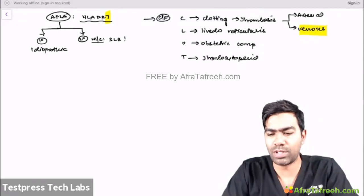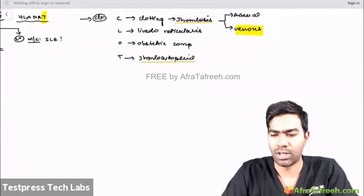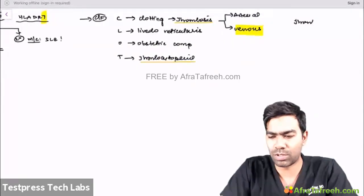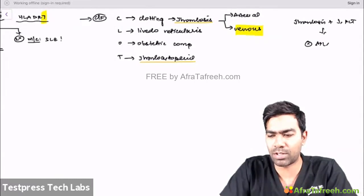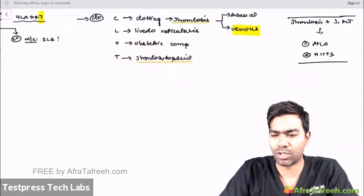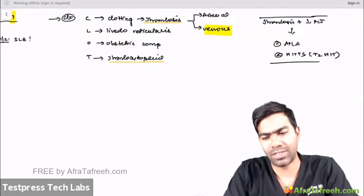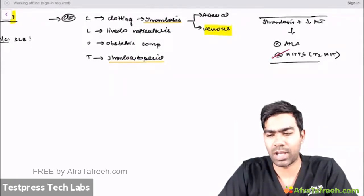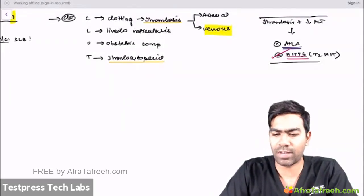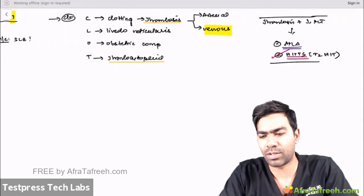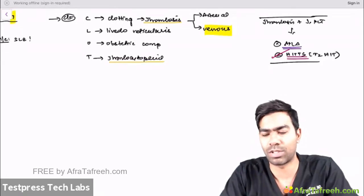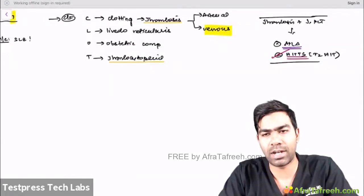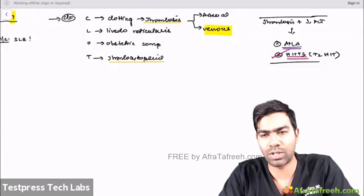APLA is one of the few diseases that produces thrombosis together with thrombocytopenia. In exams, whenever you see large-vessel thrombosis with low platelets, the two differentials are APLA syndrome and HITS (heparin-induced thrombocytopenia and thrombosis syndrome, type 2 HIT). The differentiator: if there is a history of heparin use, it is HITS; if not, it is APLA. Note that DIC causes only microvascular thrombosis, while APLA and HITS cause macrovascular thrombosis.